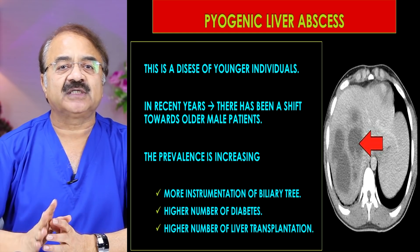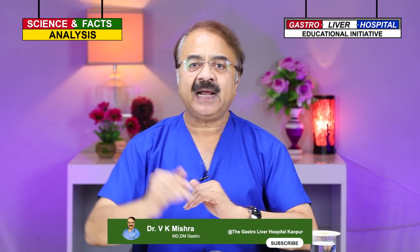The incidence of multiple liver abscesses is also increasing. Over a period of time, the incidence of pyogenic liver abscesses is rising and they are now appearing in the older population as well. Pyogenic liver abscesses are, by and large, multiple in nature, as can be seen in the photograph.